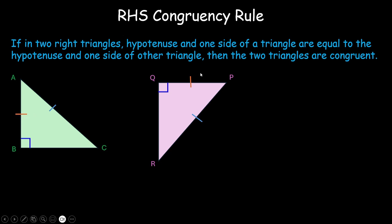For example, we have taken AB is equal to QP. It could be that AB is equal to QR or BC is equal to QR or BC is equal to QP, any other side.